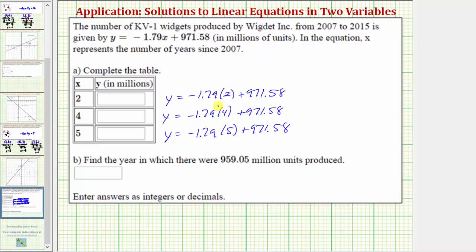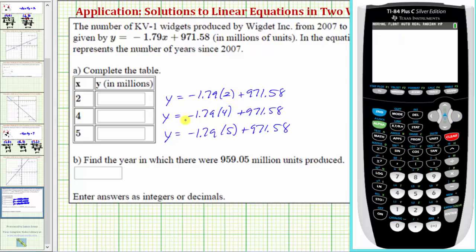Let's find these y values using the graphing calculator. So when x equals two, y equals negative 1.79 times two, plus 971.58, enter, which gives us 968. While we're here, let's also find the corresponding y values when x equals four and x equals five.